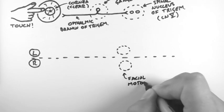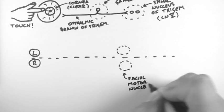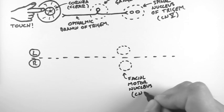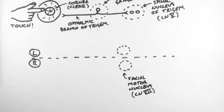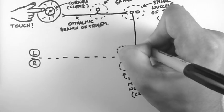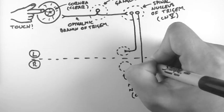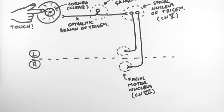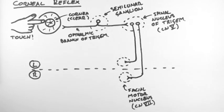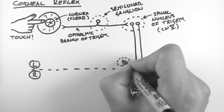And these are the nuclei that make up part of the seventh cranial nerve, which is the facial nerve. And now there are interneurons between the spinal nucleus of five and the motor nucleus of seven.